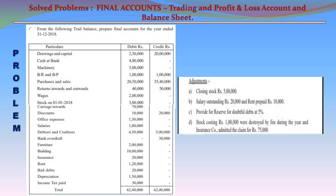Adjustments: (a) Closing stock: 5,00,000. (b) Salary outstanding: 20,000. Rent prepaid: 10,000. (c) Provide for reserve for doubtful debts at 5%. (d) Stock costing 1,00,000 was destroyed by fire during the year and the insurance company admitted the claim for 75,000.